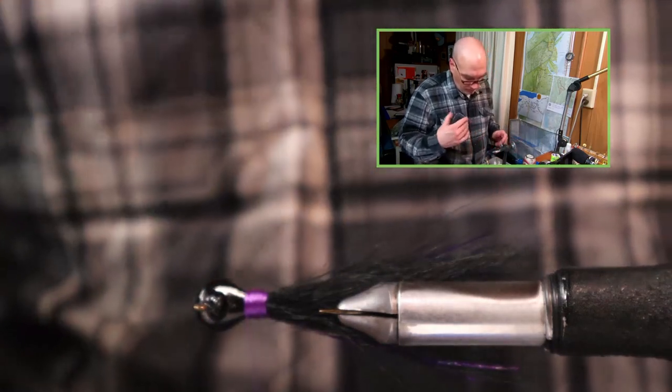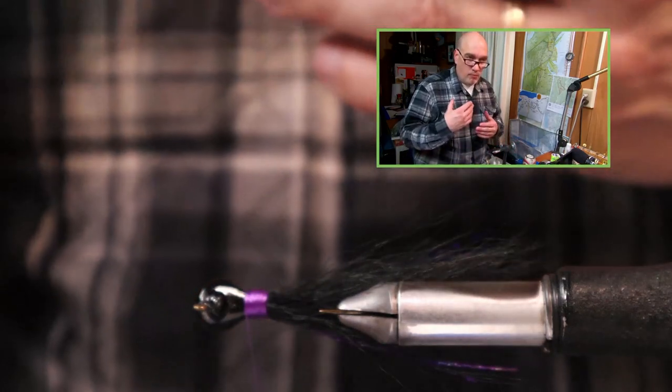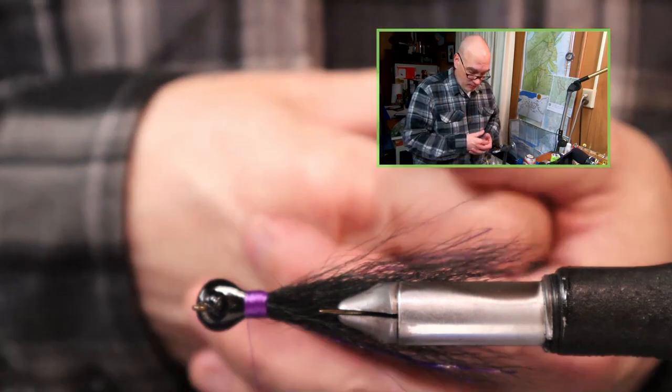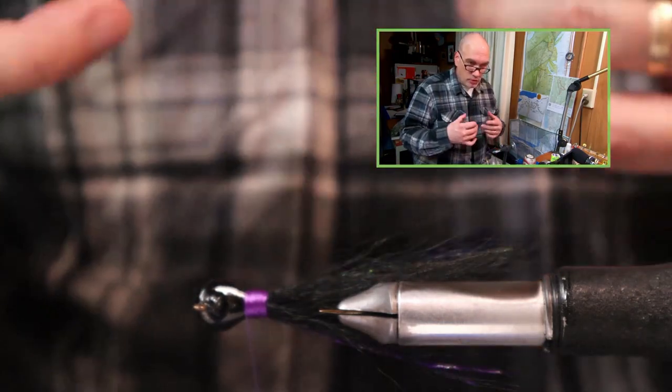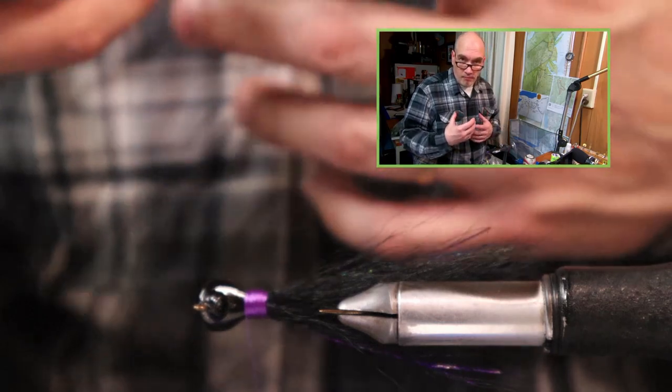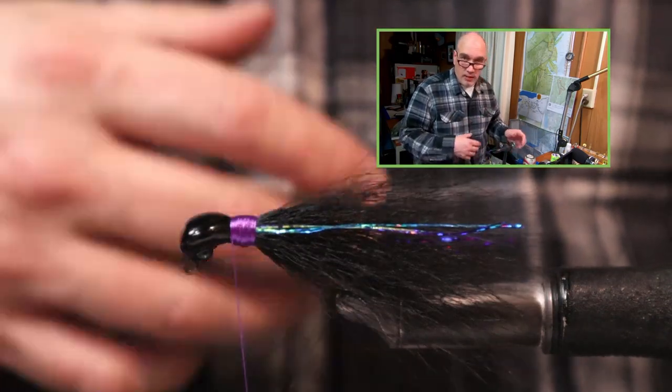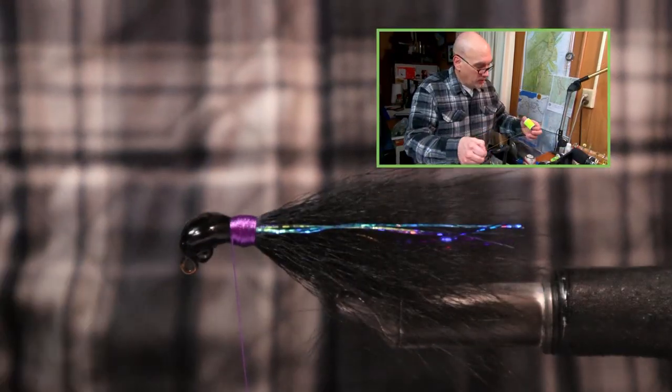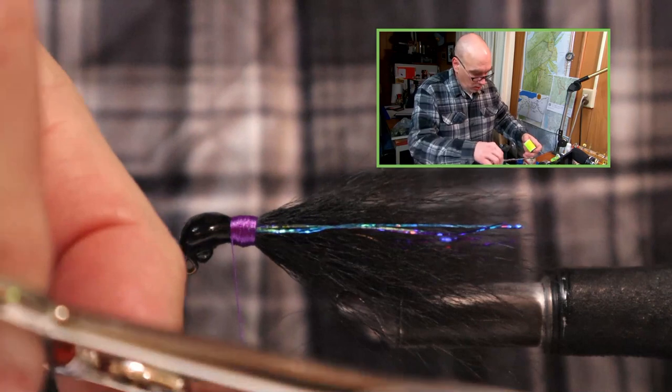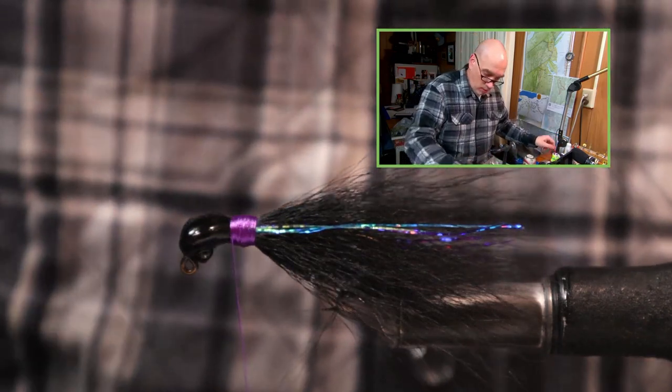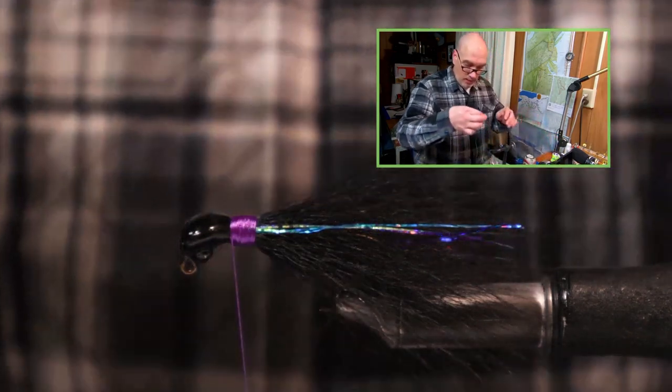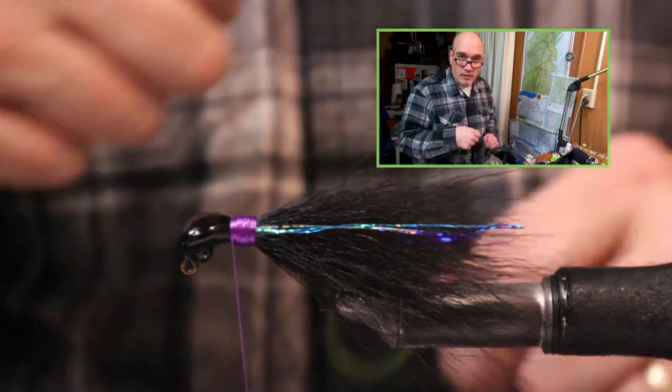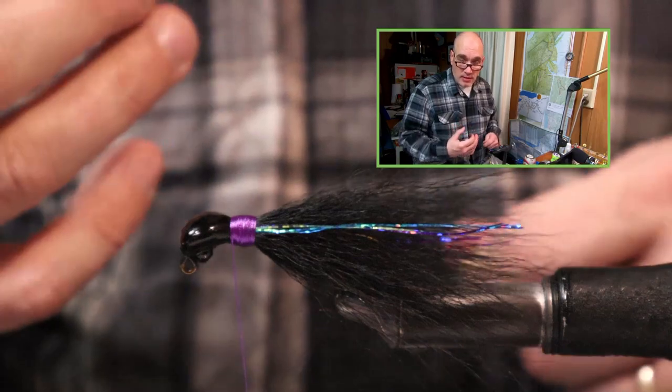On these bass jigs, because of the lead collar that we're tying on top of, these collars do tend to be a little bit bigger than if I was just tying a typical bucktail on a bare hook shank. During the process, for each of the pinches that we locked on, you can add head cement at that stage or some type of glue.